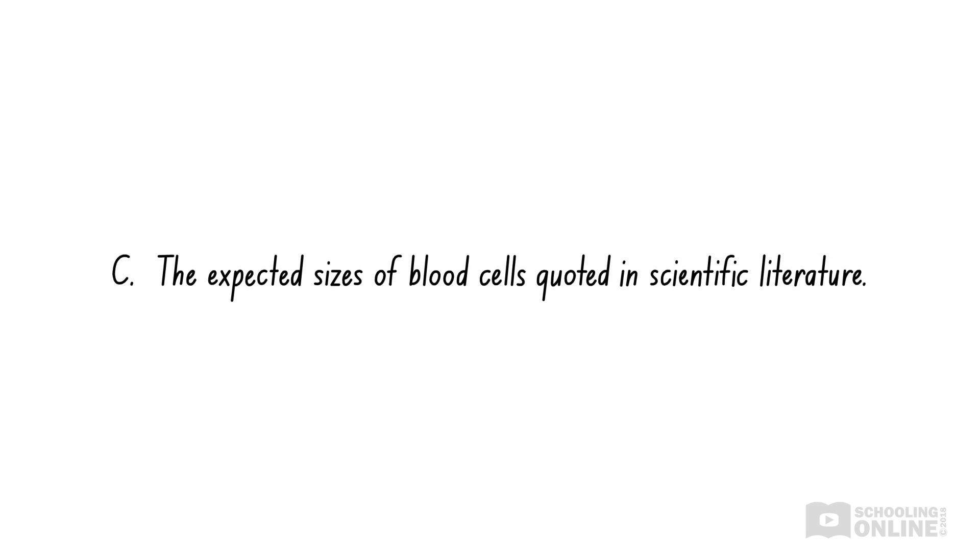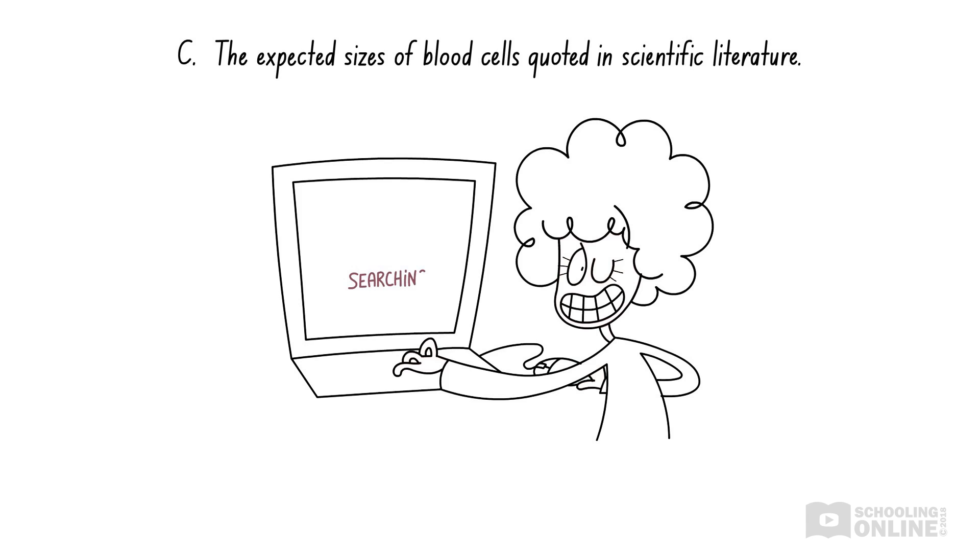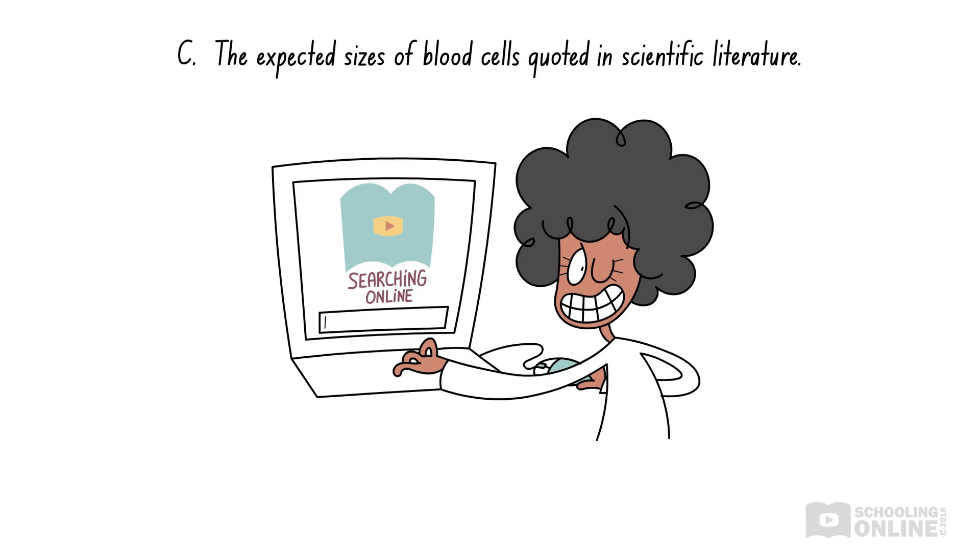Option C suggests that Donna should compare her results to the theoretical sizes of blood cells mentioned in scientific literature. This is a type of secondary source that is reviewed by several experts before it is published. Scientific literature is generally very accurate and reputable, so any results shown can be considered as the true value. You can think of scientific literature as a stack of high-quality textbooks that university professors refer to. Therefore, it looks like option C is the correct answer. However, let's check option D before making a decision.